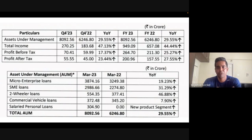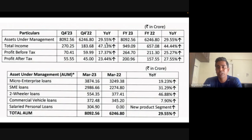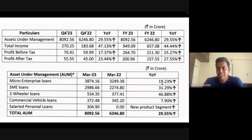Now looking at growth: Mass Financials' AUM grew almost 30 percent YoY — good growth in itself. But here's a problem with Mass: profit after tax growth is lower than AUM growth, meaning unlike Arman, Mass Financials does not have operating leverage. PAT growth should have been higher than AUM growth. I'm also a little disappointed that the micro enterprise group grew only 19 percent, given it's the biggest chunk of their book and the microfinance industry is recovering strongly.